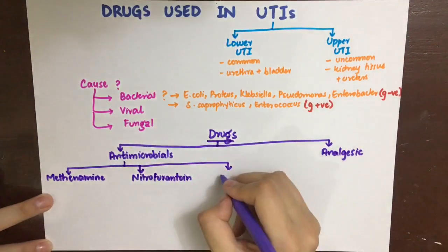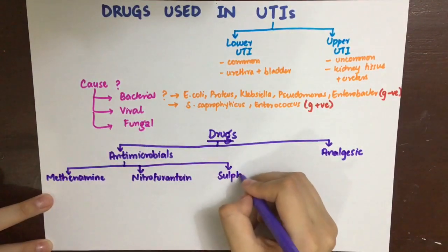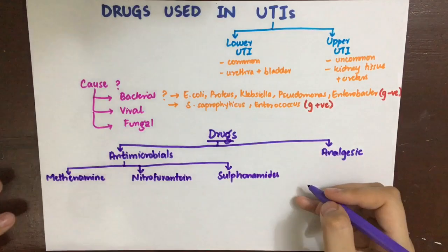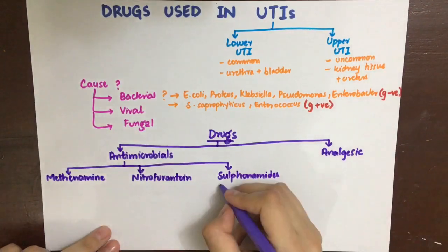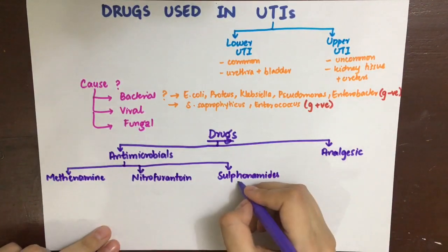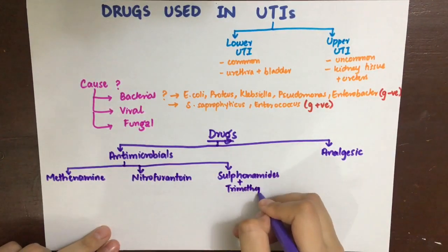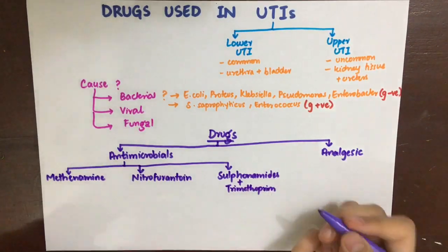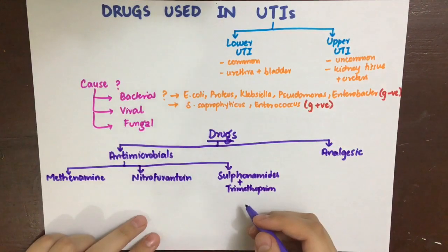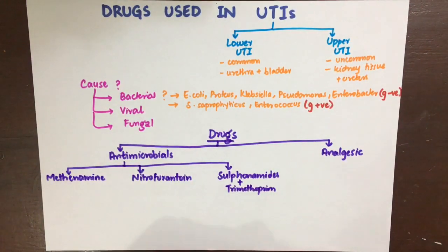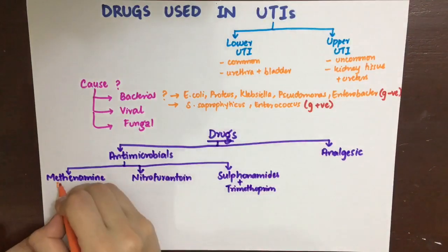The antimicrobials that can be used are methanamine, nitrofurantoin, sulfonamides, and trimethoprim, and also fluoroquinolones as discussed in the previous video. Fluoroquinolones are not listed here but need to be remembered as well.